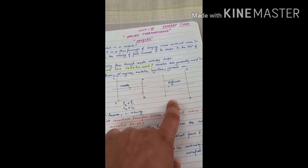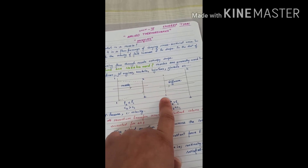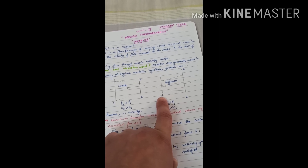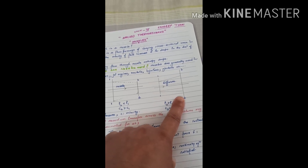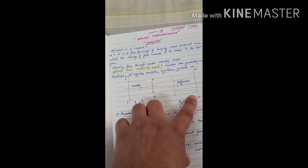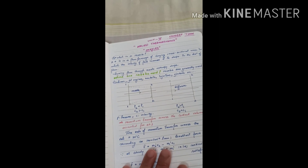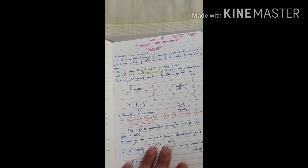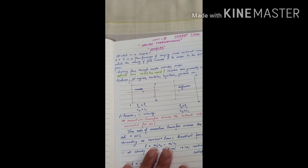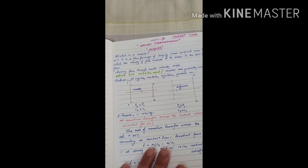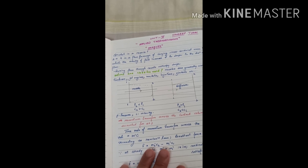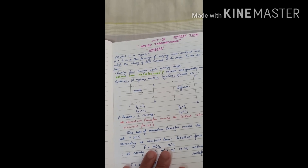A diffuser is essentially the opposite of a nozzle — at the entry point the cross-sectional area is less, whereas at the exit point the cross-sectional area is more. So basically a nozzle is a flow passage in which the cross-sectional area reduces.